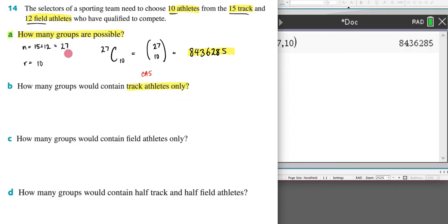No longer is my n 27 but now my n is simply the track athletes which is 15. I still have a group size of 10 so I'm still having my r being 10. So now I can rewrite this as 15C10 and remember this is the same thing as if I wrote it as 15 on 10.